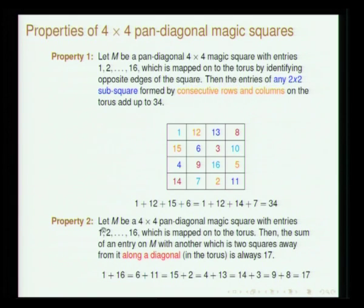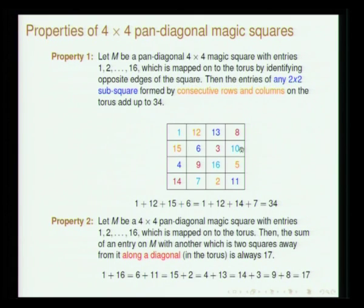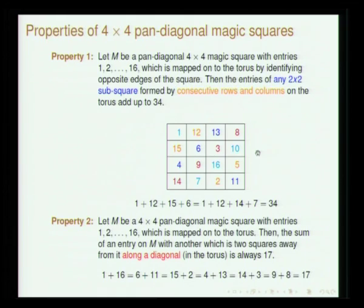The second property: in a 4×4 pan-diagonal magic square, the sum of alternate diagonal elements (with one cell in between) equals S/2 = 17. For example: 7+10 = 17, 4+13 = 17, 12+5 = 17, 6+11 = 17. Going diagonally and wrapping around on the torus, these alternate elements across any diagonal sum to S/2. This is the second property. I will stop here and we will continue in the next lecture. Thank you.